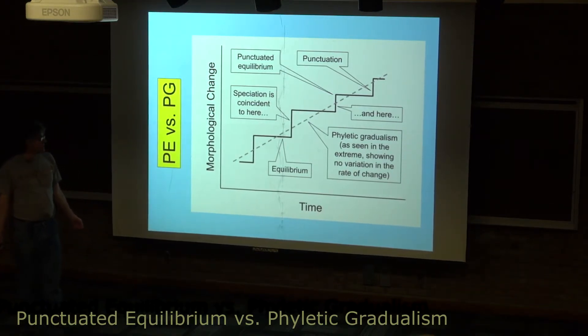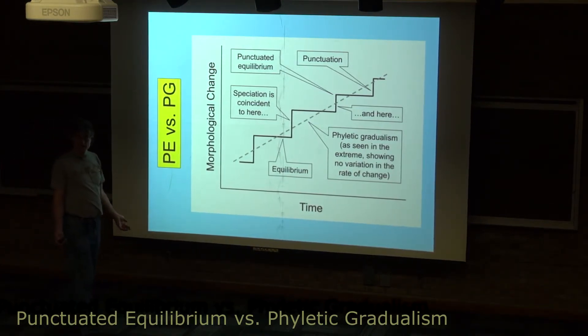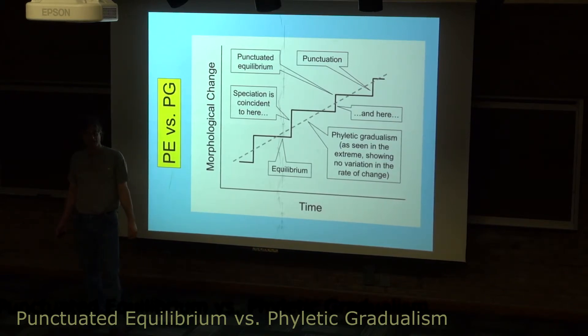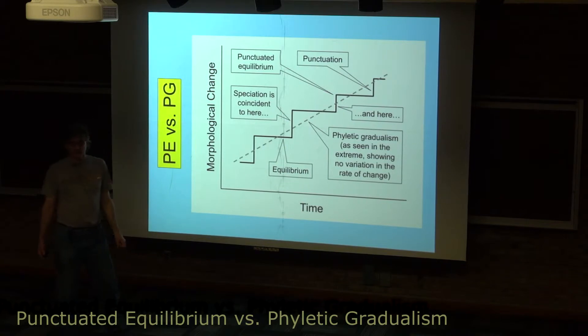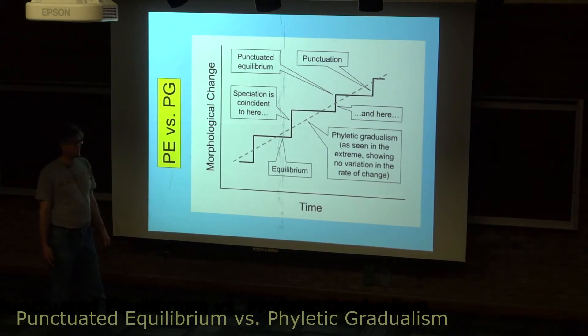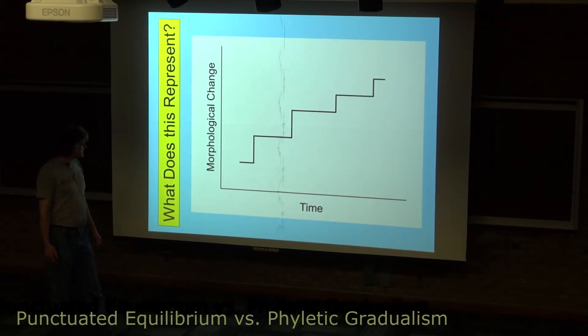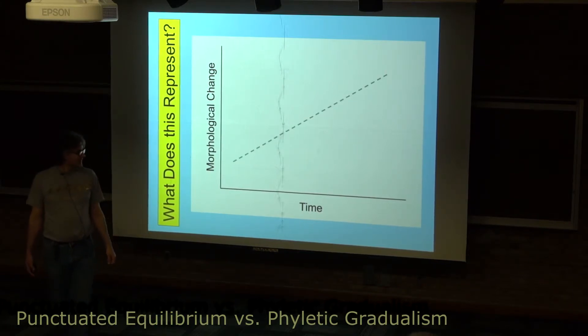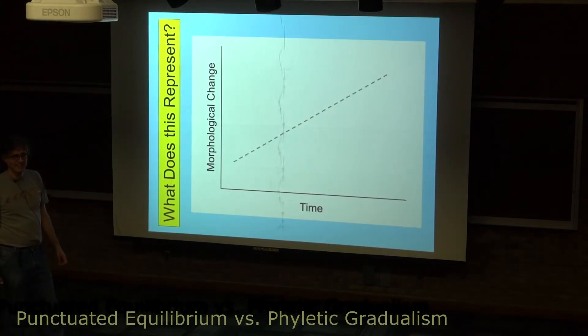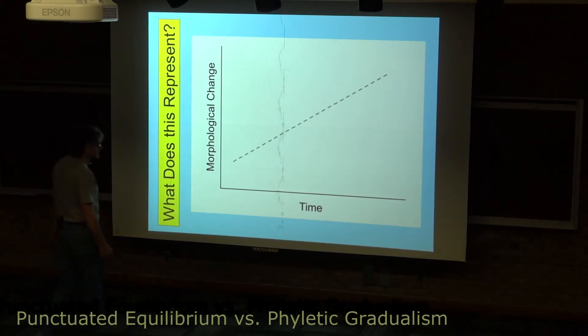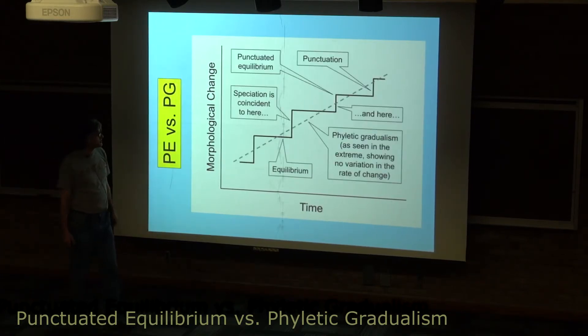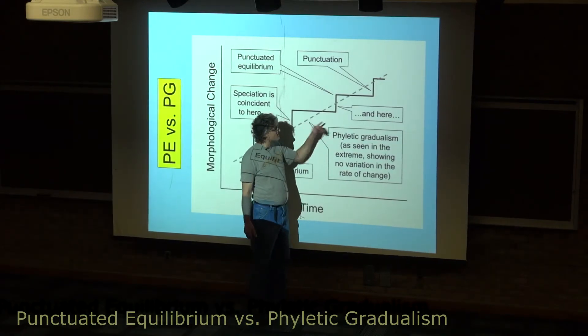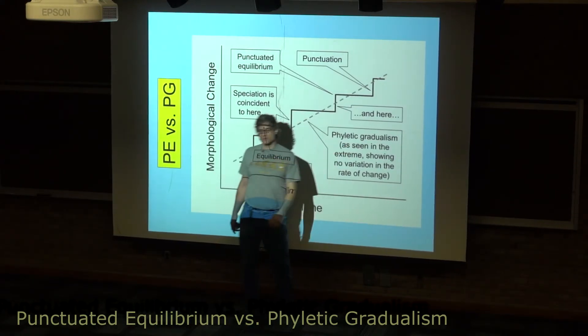Again, that's essentially the same ideas we talked about in the speciation scenario we went through. This contrasts with phyletic gradualism - this dotted or dashed gray line represents phyletic gradualism.